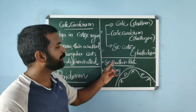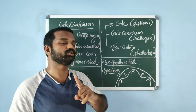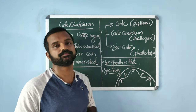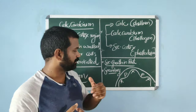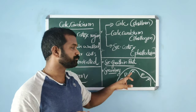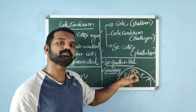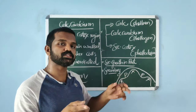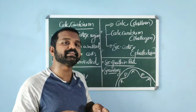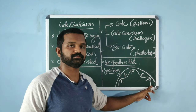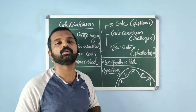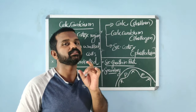Next, about secondary growth in root. In root, vascular cambium is completely secondary in origin. Vascular cambium develops below the phloem and above the protoxylem. Root has a radial vascular arrangement, so vascular cambium initially forms a wavy cambium ring, and later it becomes circular. Further growth is similar to secondary growth in dicot stem.